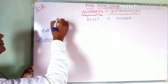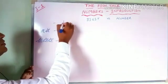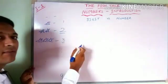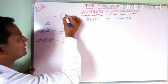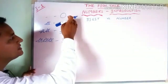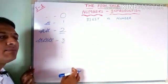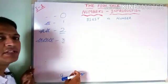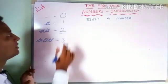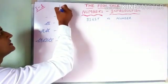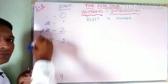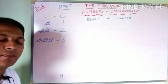In our lower classes, we have learned the symbols for these quantities from 1 to 9, and if there is no quantity, we have assigned a symbol called zero. These single numerical symbols that we have assigned to a particular fixed quantity are called digits.